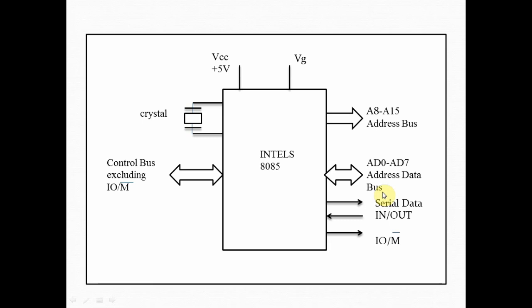And this multiplexing gives you the advantage of reduction of number of pins from 16 to 8. Otherwise there should be separate 8 pins available for address that is A0 to A7 and separate for data. The high order address bus is A8 to A15 which is a separate bus.